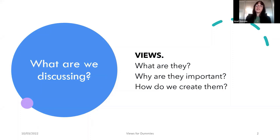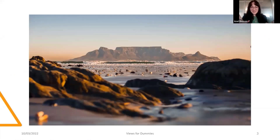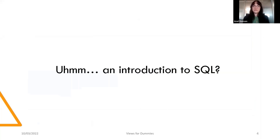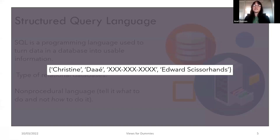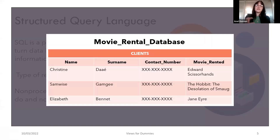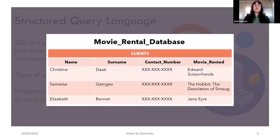So let's start with: what is a view? Before we can start discussing views, we first need to know in what context we are referring to them. The views we will be looking at are from the perspective of SQL — the Structured Query Language — a programming language used to turn data in a database into usable information. So if we have raw data that means nothing to anyone, we can structure it in a way that actually means something. We can see the data is part of a movie rental database — just information on someone who rented a movie. We use SQL to turn data into meaningful information.